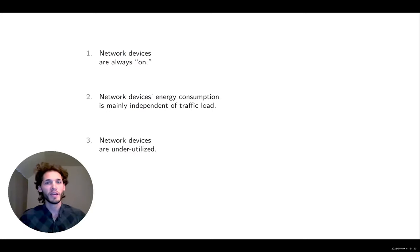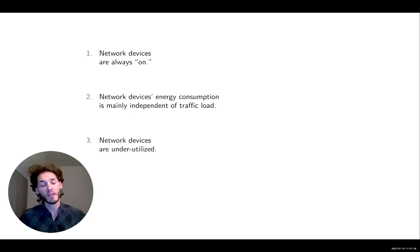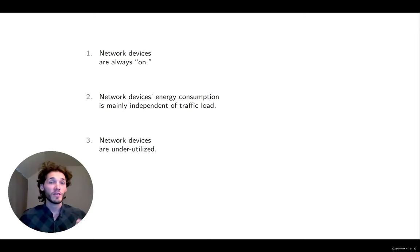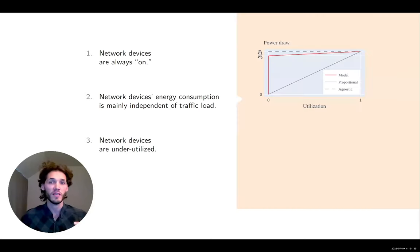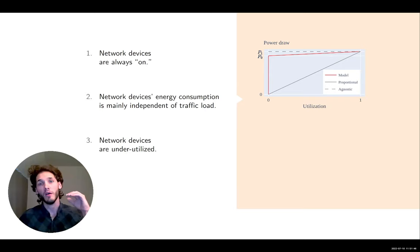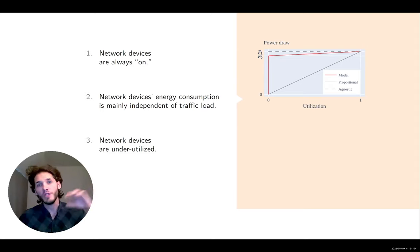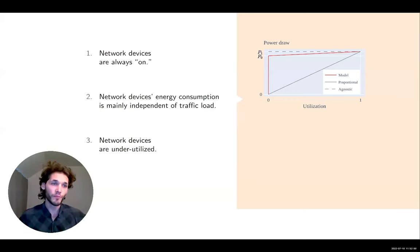What can explain such numbers? Essentially three aspects. First, in the internet, network devices are always on — they've been designed that way. Second, the energy consumption of those devices is generally independent of their traffic load. In today's devices, the power profile tends to look like this: we are quite far from being proportional. There is a high overhead that comes on just from powering devices on, and we do see an increase in energy consumption with utilization, but it's not that dramatic.